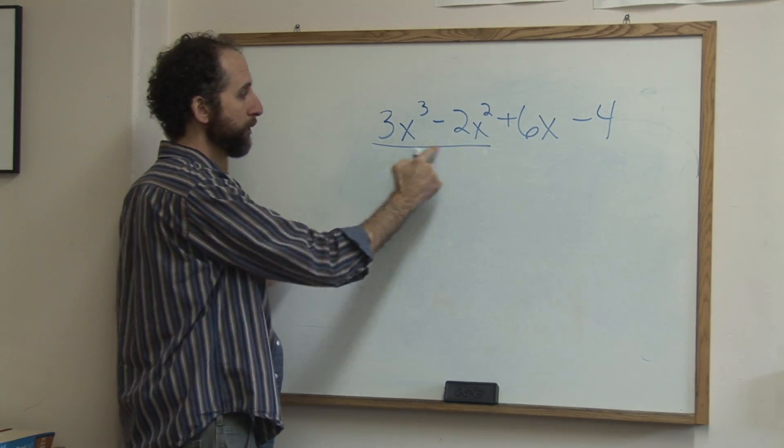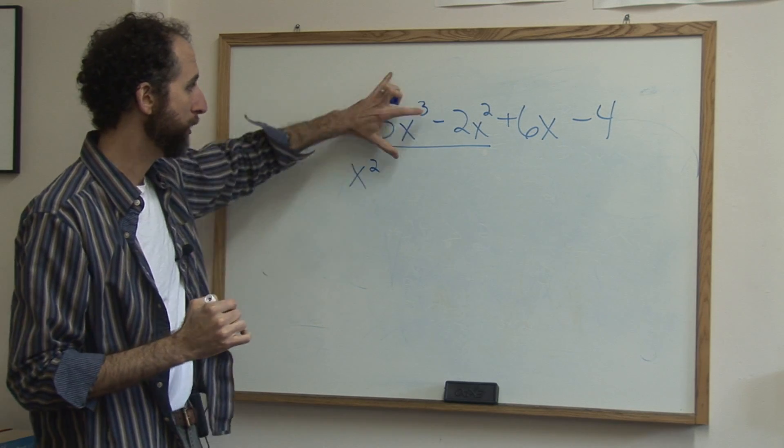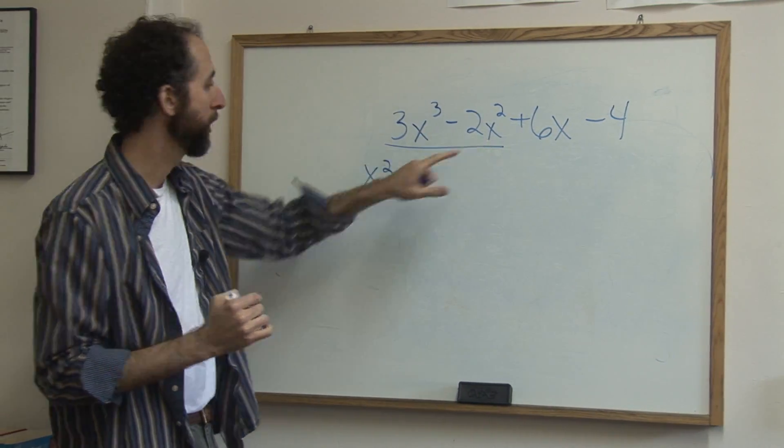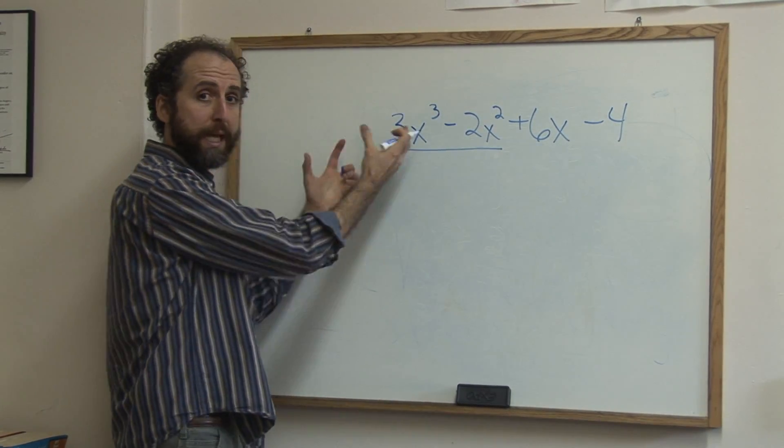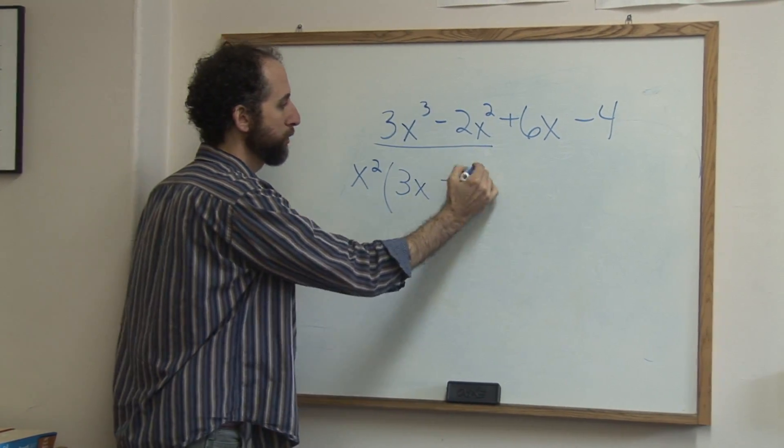So the greatest common factor of these two terms is actually x squared, meaning that x squared goes into this part and it goes into this part, or this term. So when I factor that out, when I take it out, when I pull it out of each of these, I'm left with 3x minus 2.